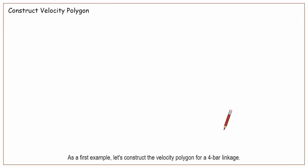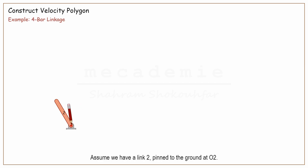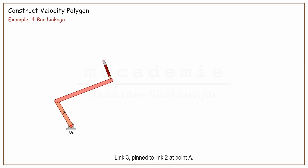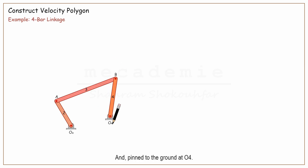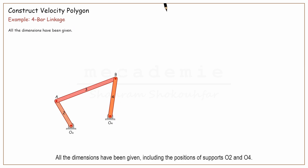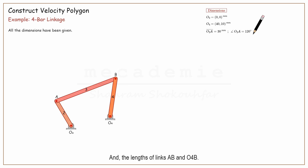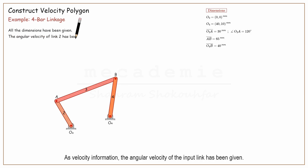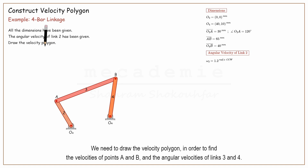As a first example, let's construct the velocity polygon for a 4-bar linkage. Assume we have link 2, pinned to the ground at O2. Link 3 is pinned to link 2 at point A. Link 4 is pinned to link 3 at point B, and pinned to the ground at O4. All the dimensions have been given, including the positions of supports O2 and O4, the length and angle of the input link O2A, and the length of links AB and O4B. The angular velocity of the input link has been given, and we need to draw the velocity polygon to find the velocities of points A and B and the angular velocities of links 3 and 4.